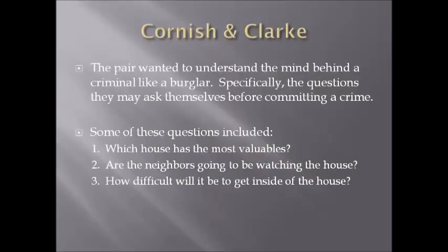Cornish and Clark are people who influenced Rational Choice Theory and its modern interpretation used today. They wanted to explore the mind of a burglar and what he might ask himself before stealing from someone else's house. They determined that a burglar would ask questions such as: which house would have the most valuables, are neighbors watching over the house, and how difficult it might be to gain access to the house.